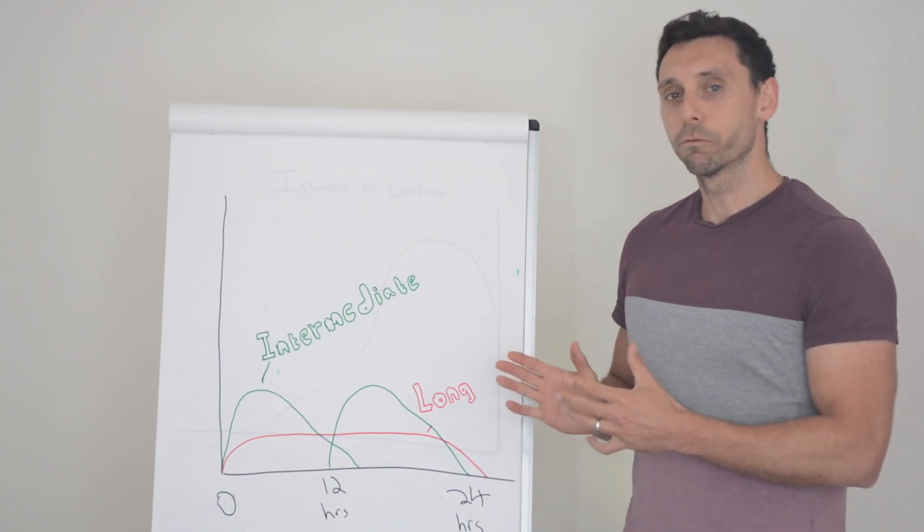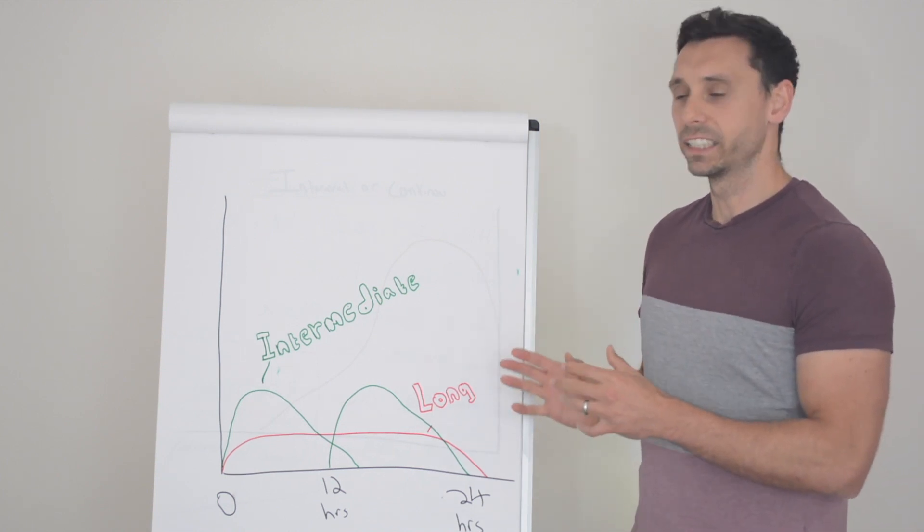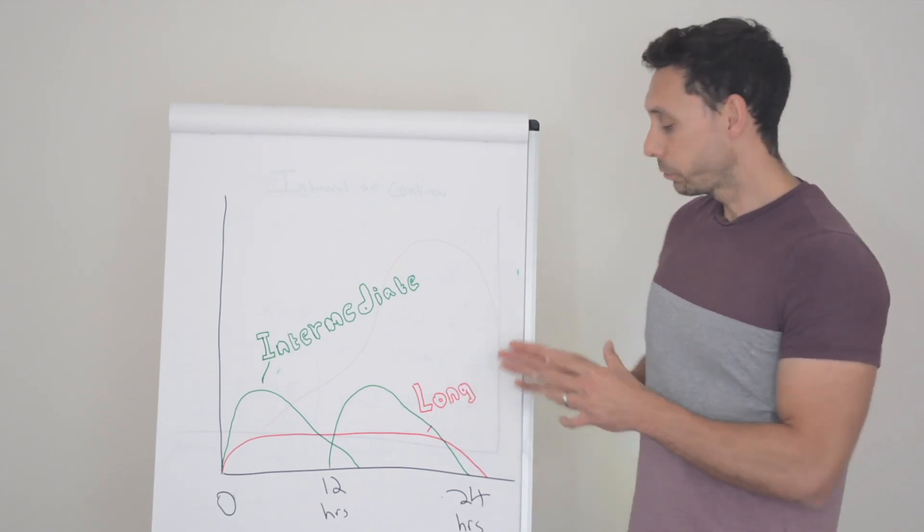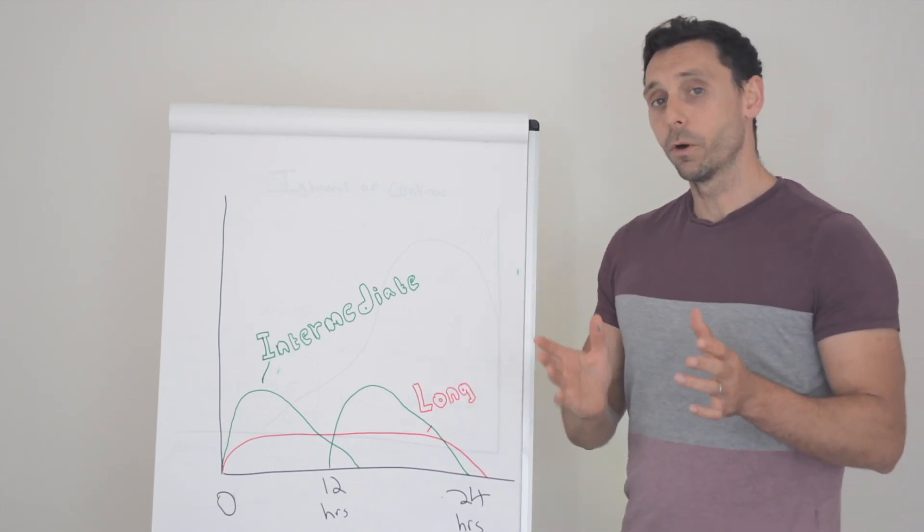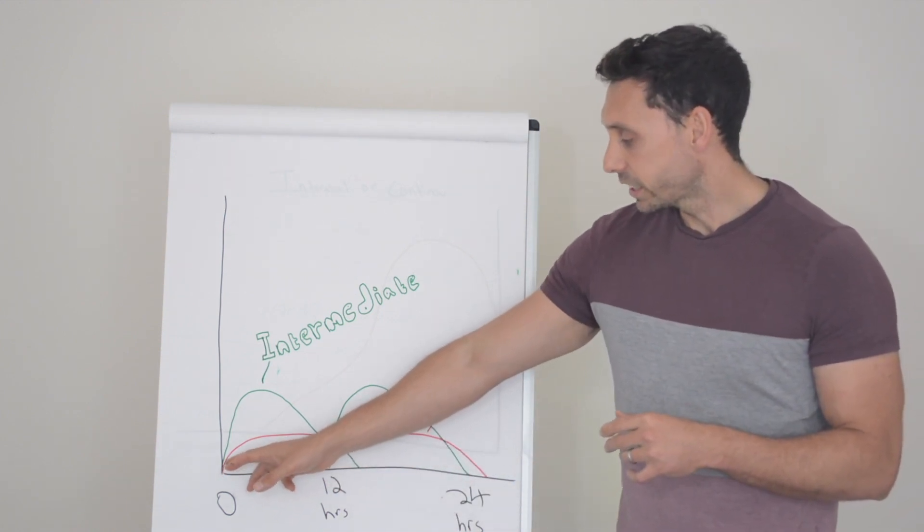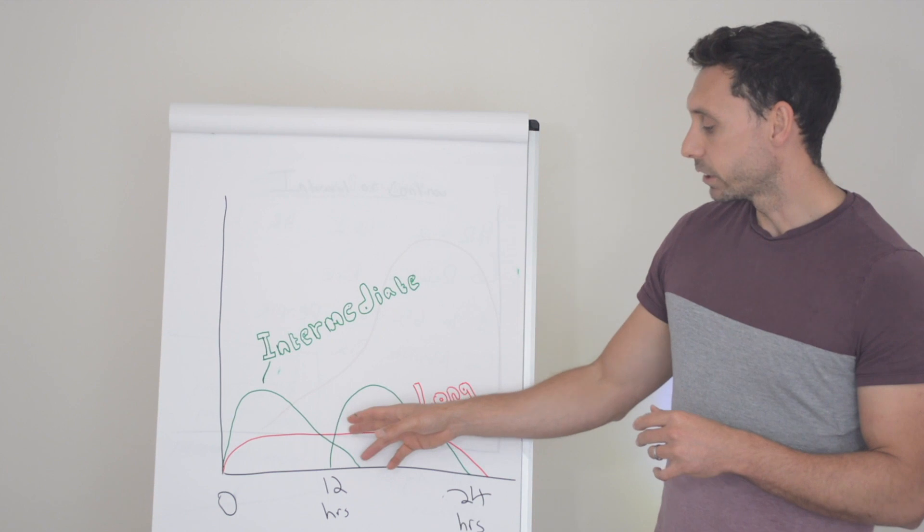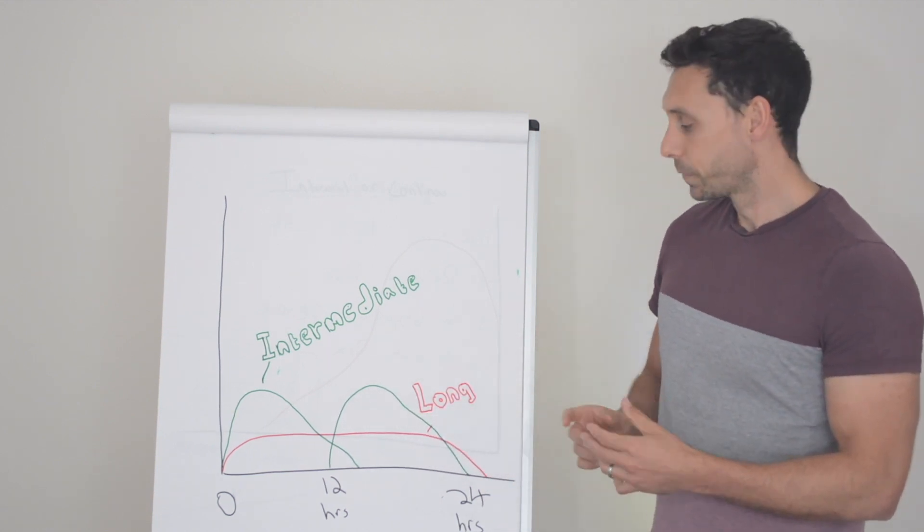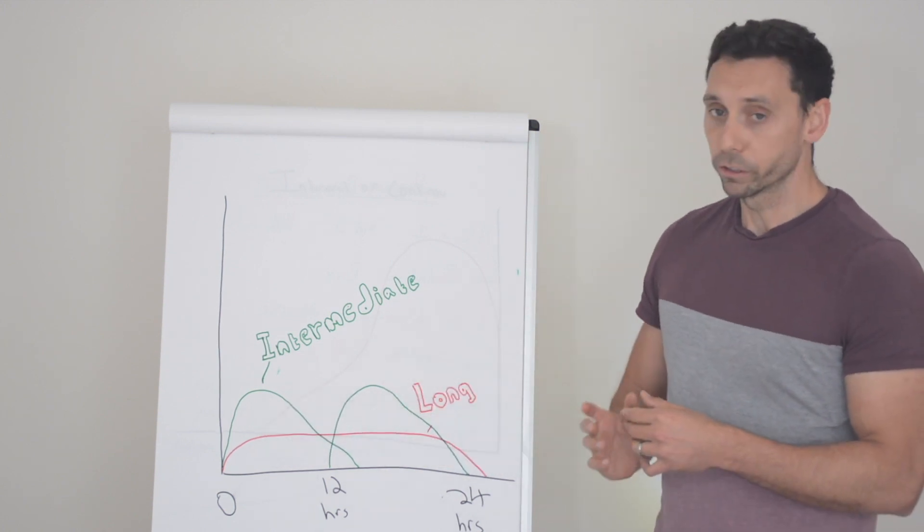As you can see from our graph, we can compare intermediate acting insulins profile compared to long acting insulins. So long acting insulins, which we've done a video on, which is available on the blog as well, you can see they are injected and then they're quite a steady release throughout the day and you generally get around 24 hour insulin coverage.